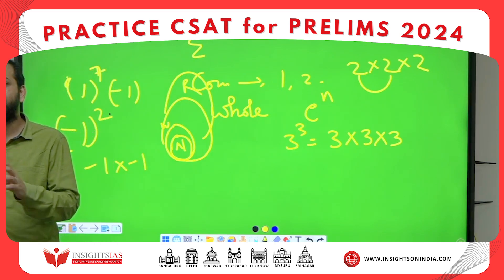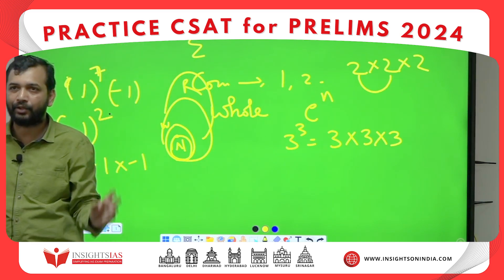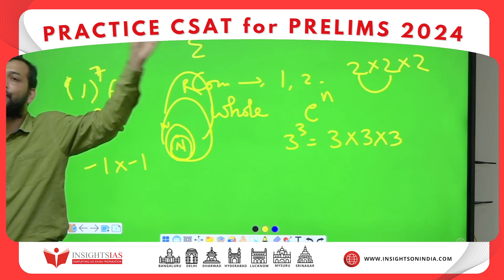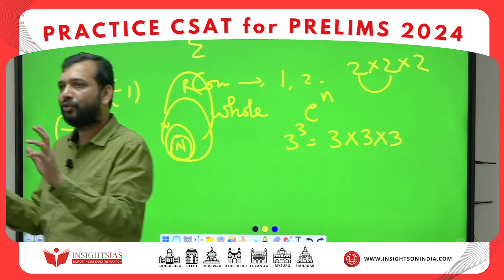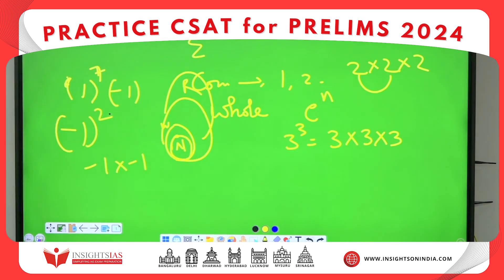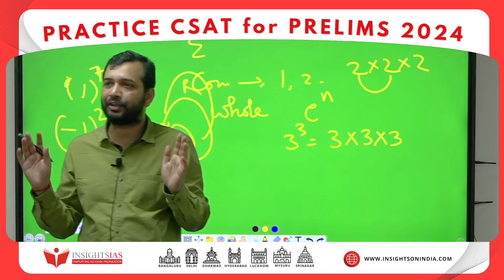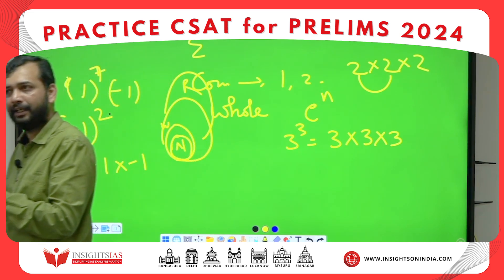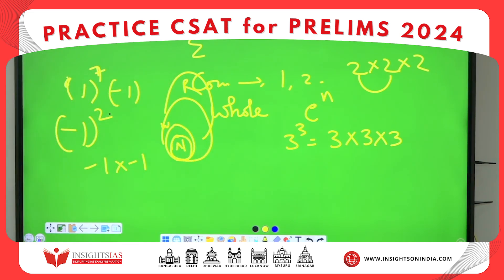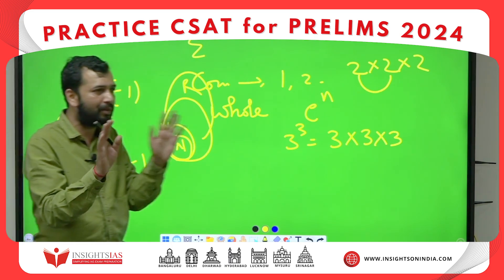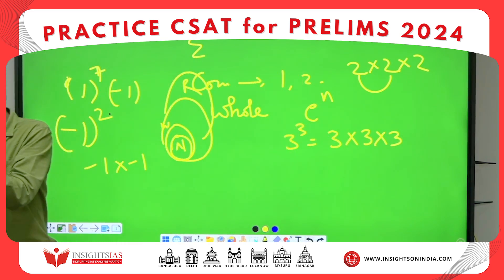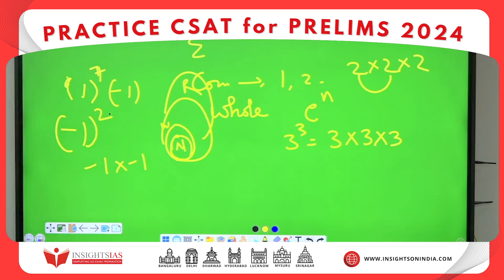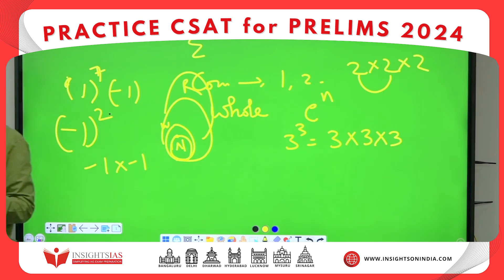When attending data sufficiency questions, if a statement mentions an integer, first try an integer, then try a fraction and check if the condition is satisfied by both. If both satisfy, you cannot come to a conclusion — that statement is not sufficient. When doing statement 2, do not club the information from statement 1. Read statement 2 separately, and only combine information from both statements if statement 2 alone is not working.